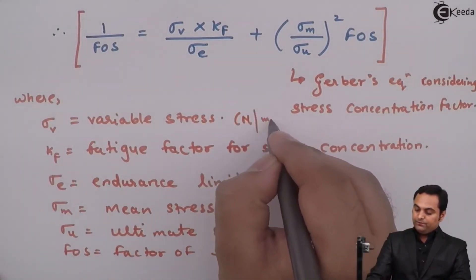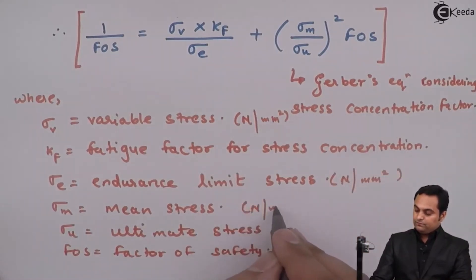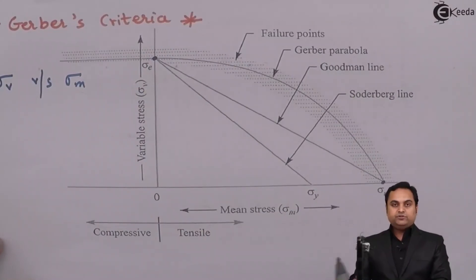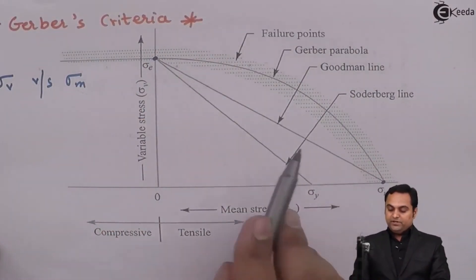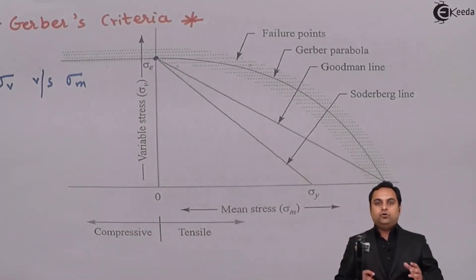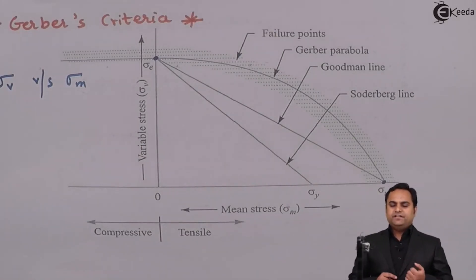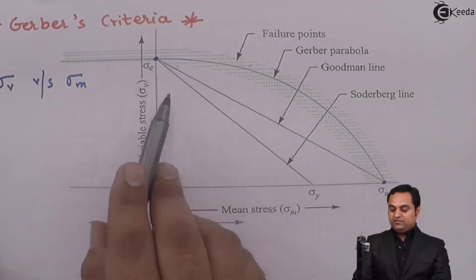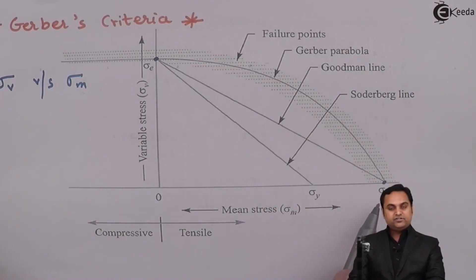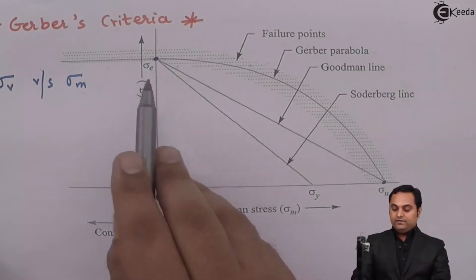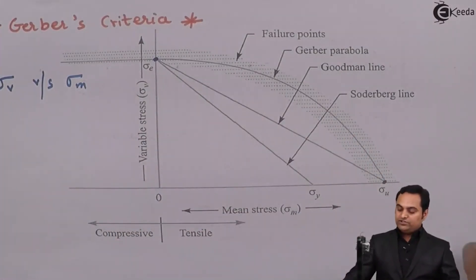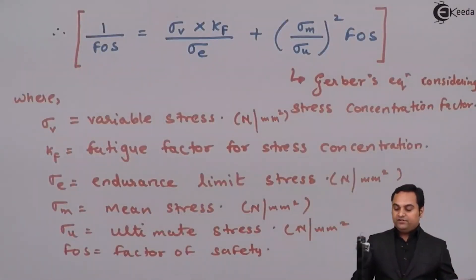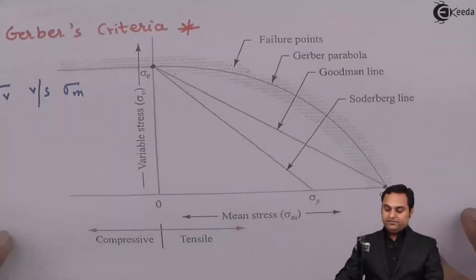All stress values have units of Newton per meter squared. In this video we have seen Gerber's criteria — a parabola where points closer to it are failure points. Simplifying it gives the Goodman line (using ultimate stress) and Soderberg line (using yield stress). We also covered two equations: one neglecting the stress concentration factor and one considering it.